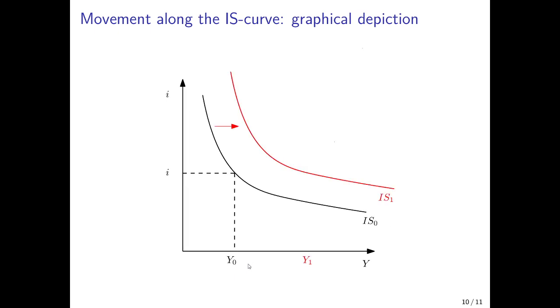Now the government increases expenditures and decreases taxes, which means that for the same interest rate I, we would have a much higher output level Y1. For any interest rate I, we would have a higher output level if the government increases expenditures or decreases taxes. This change amounts to a shift of the curve, and it cannot be illustrated by a movement along the curve.